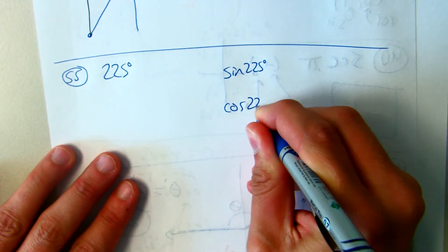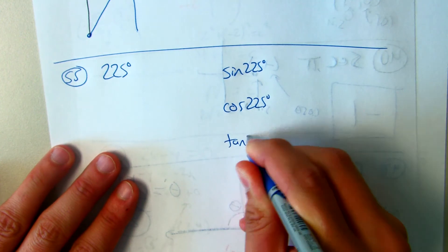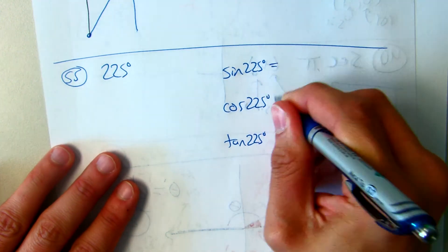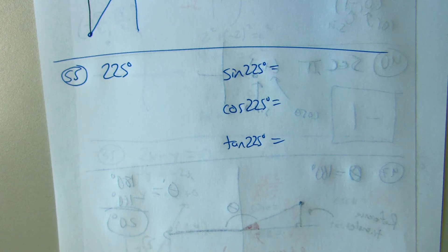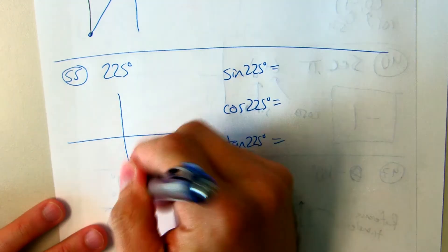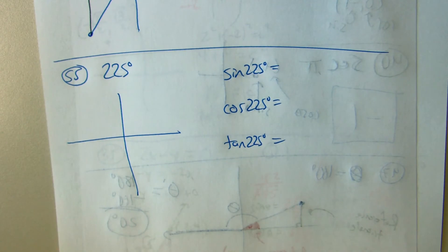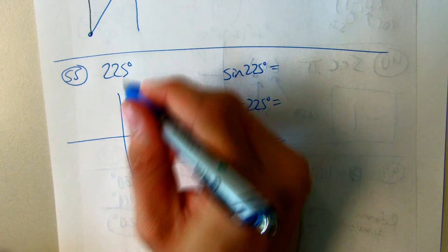The only way you could give an exact answer without a calculator is if this angle happens to be a unit circle angle, because that's the only way you can do it without a calculator. Unit circle always basically has the same three steps. You need to know where 225 degrees is.